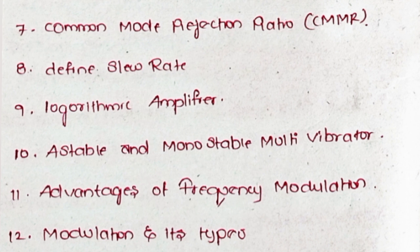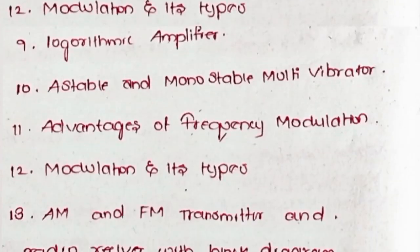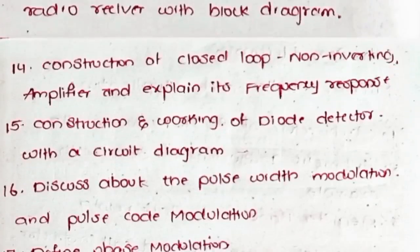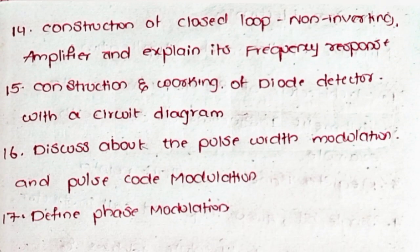Eleventh, advantages of frequency modulation. Twelve, modulation and its types. Thirteenth, AM and FM transmitter and radio receiver with block diagram. Fourteenth, construction of closed-loop non-inverting amplifier and explain its frequency response.